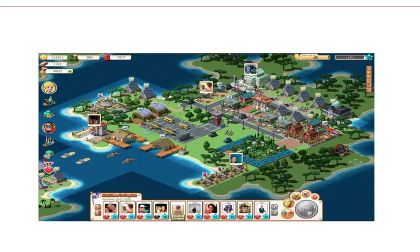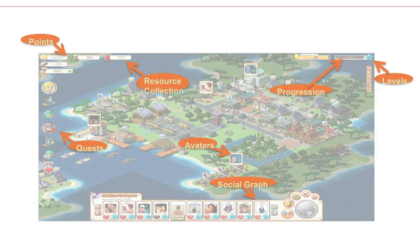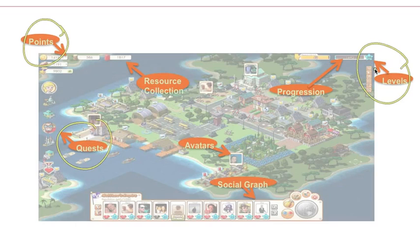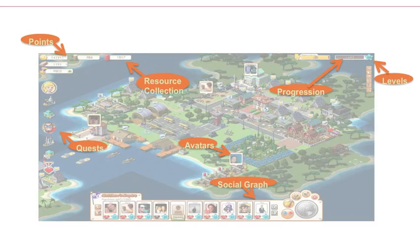You'll recall I gave the example earlier of Empires and Allies, the Zynga game where I showed you the game and then showed you some of the different kinds of elements, things like the points and the quests and the levels and so forth. This is a template for what game elements might look like. But let's step back and talk about what game elements are initially and then we'll build up a list of common game elements that are used in gamification.